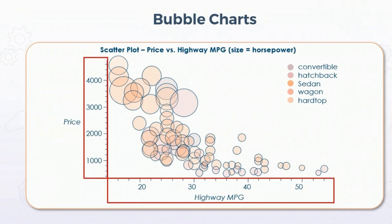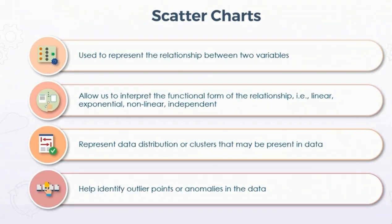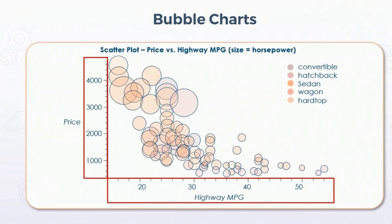One more kind of chart is the bubble chart. The bubble chart is useful for representing more than two variables — it is an extension of the scatter plot. Every bubble represents size, giving information about quantity. In this scatter plot about price and highway MPG, it is also including horsepower — horsepower is given by the size of the bubble.